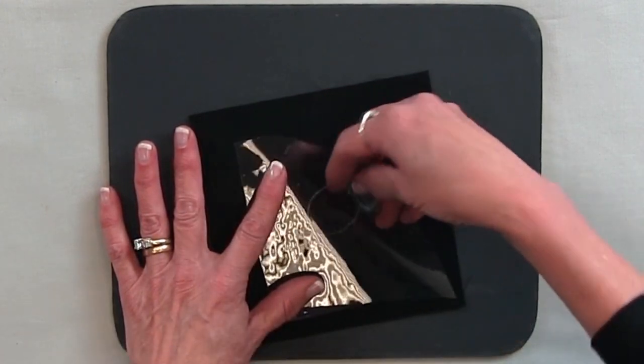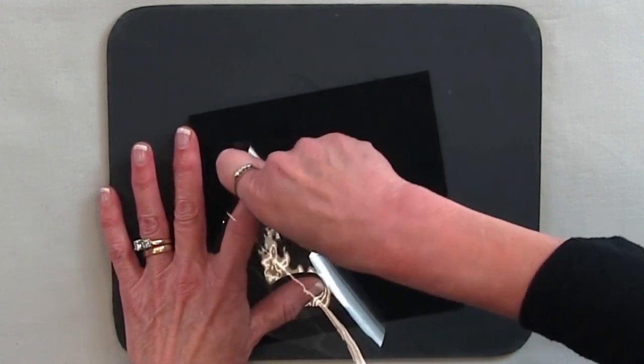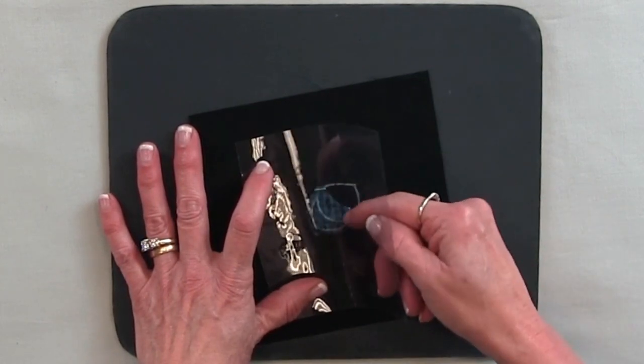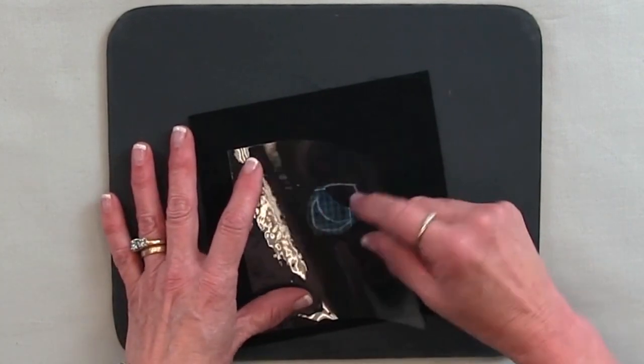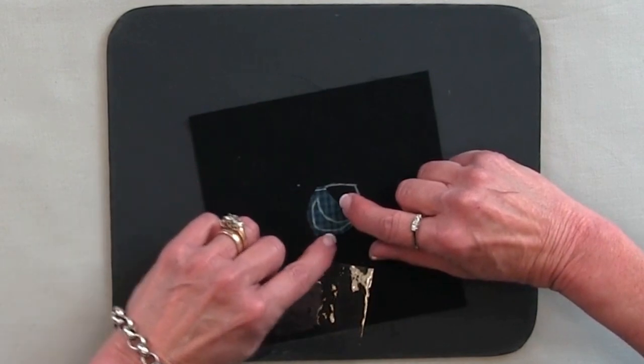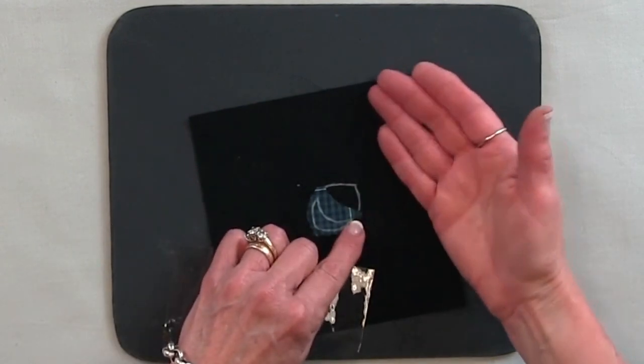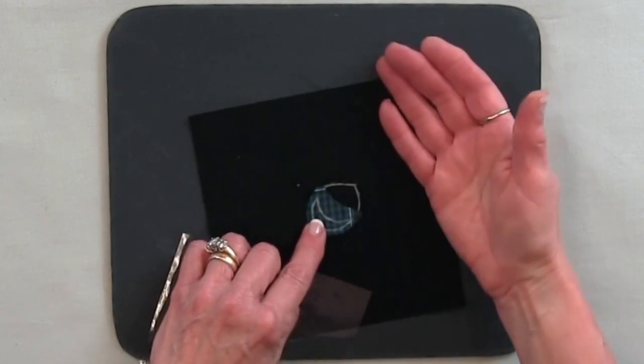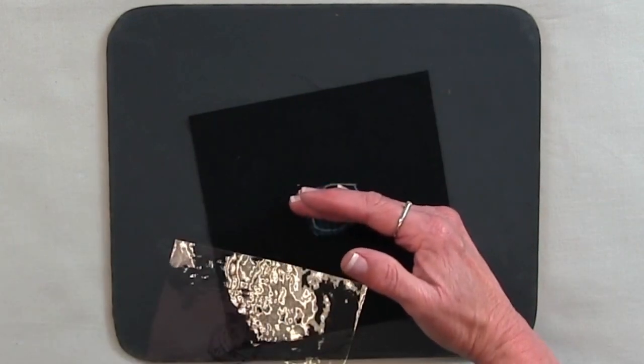Once I put the fabric underneath, I'll be able to move that into position over the underneath piece and applique this edge. Then the next piece that goes on top will be appliqued over this, and the next piece that will be appliqued over that.